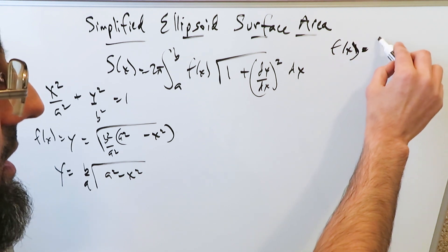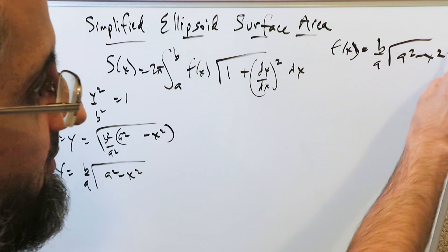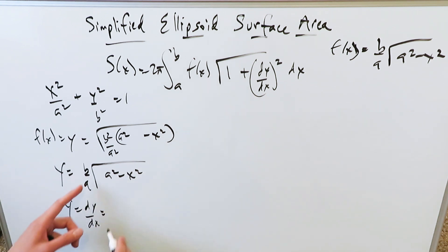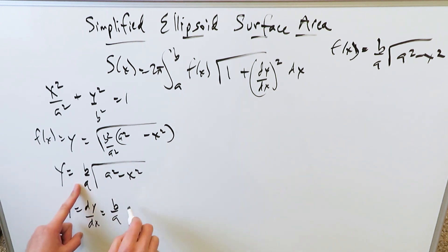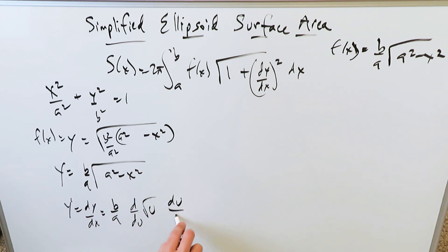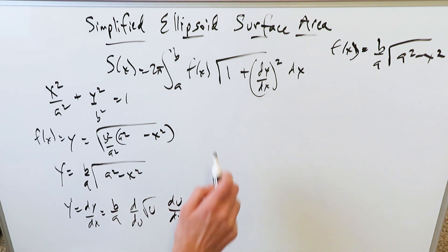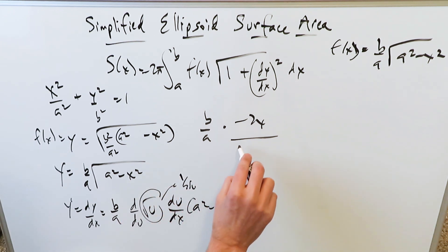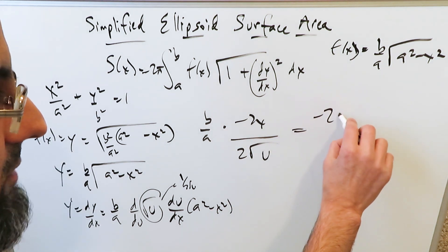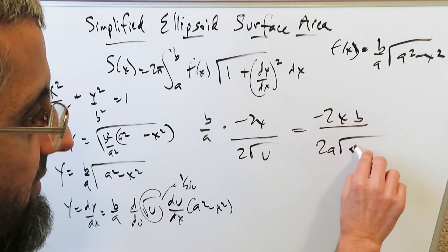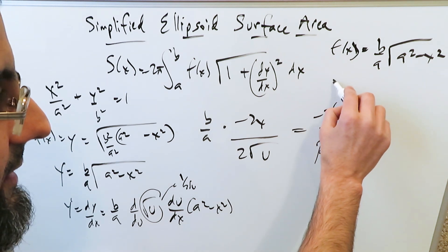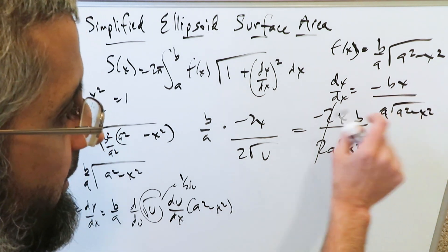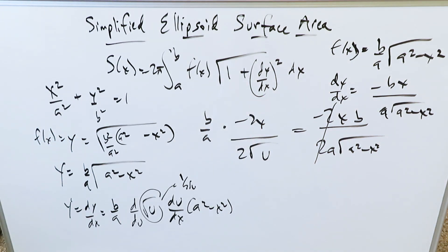So let's bring it here. f(x) = (b/a)√(a² − x²). But there's one more item I need — it's the derivative. If y equals this, then dy/dx is the derivative of this, and you would use the chain rule. b/a is a coefficient — push it out. Then do a chain rule with respect to u, where u = a² − x². The derivative of √u is 1/(2√u), and the derivative of a² − x² is −2x. So you get (b/a) × (−2x)/(2√(a² − x²)), the 2s cancel, and dy/dx = −bx / (a√(a² − x²)). We need this because it appears right here in the formula.